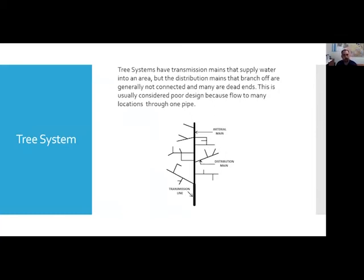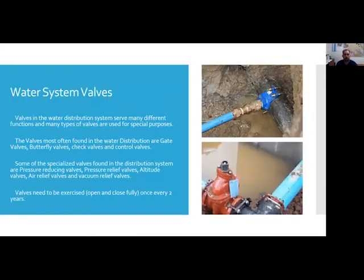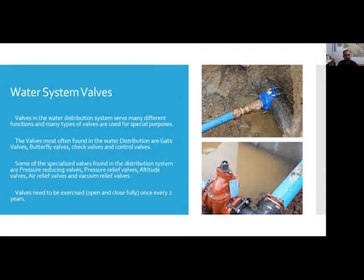Water system valves serve many different purposes and functions. Valves most often found in water distribution are gate valves, butterfly valves, check valves, and control valves. Specialized valves include pressure reducing valves, pressure air relief valves, altitude valves, and air and vacuum relief valves. Generally, you want to exercise your valves — open and fully closed — at least minimally once every two years.